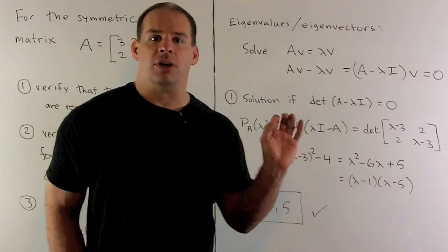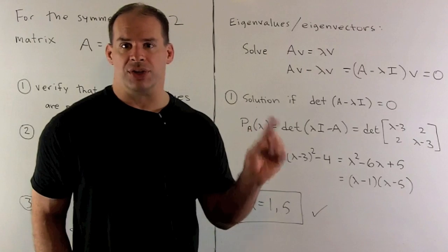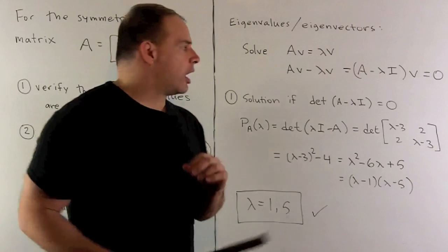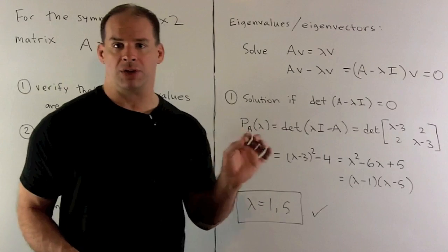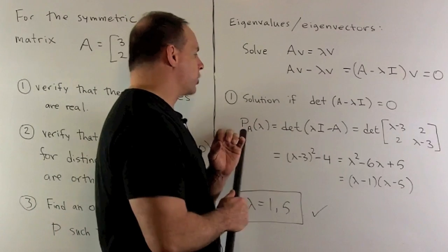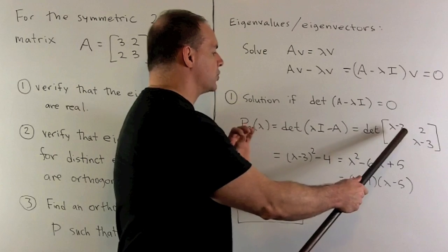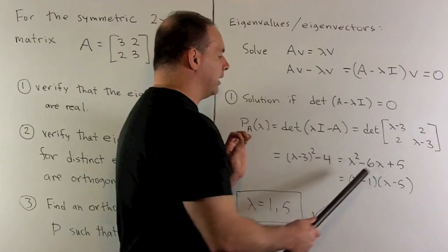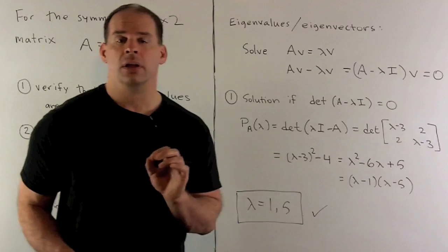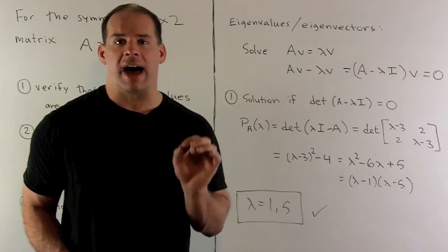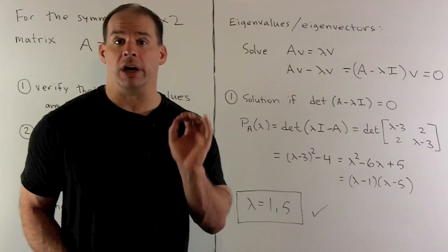That null space exists if and only if the determinant of A minus lambda I equals zero. We call that expression our characteristic polynomial. Working that out, this equals zero exactly when lambda equals one or lambda equals five. So my eigenvalues are one and five, which verifies that the eigenvalues of my real symmetric matrix are real.